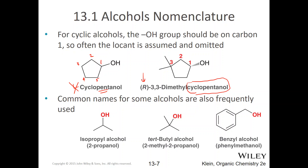You do have to state the R configuration because it's a stereo center at carbon one. Some common names for alcohols are also frequently used. Iso is really common — we rarely call isopropyl alcohol 2-propanol; it's almost always called isopropyl alcohol. There's also tert-butyl alcohol — that's the common name for the IUPAC 2-methyl-2-propanol. And then benzyl alcohol, which contains a benzyl group.